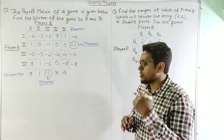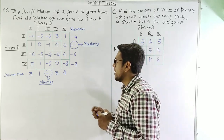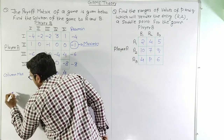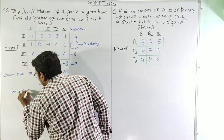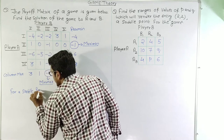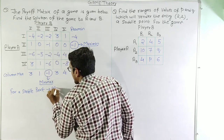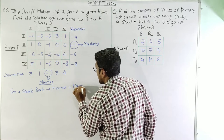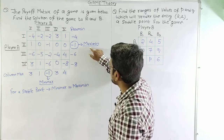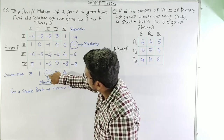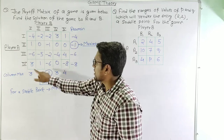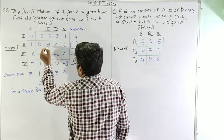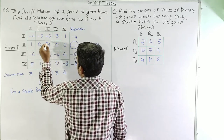We learned in previous lectures that in order to have a saddle point, the maxi-min value has to be equal to the mini-max value. We can see that the maxi-min value is -1 and the mini-max value is also -1, which means this particular game has a saddle point. The saddle point is located at the intersection of row 2 and column 3.